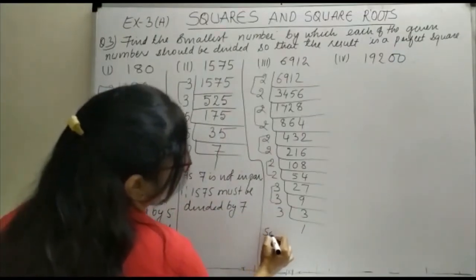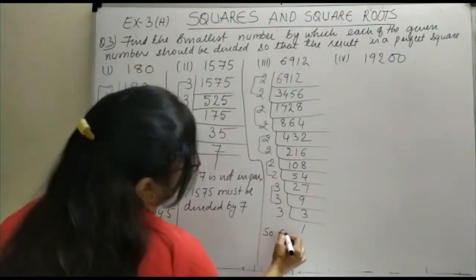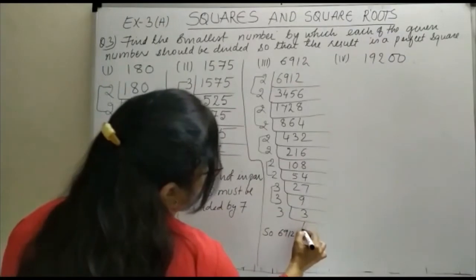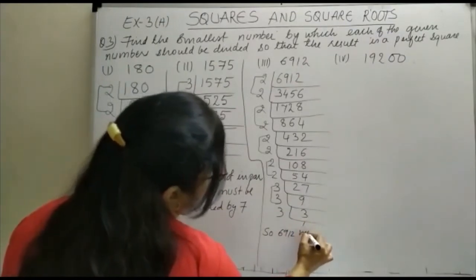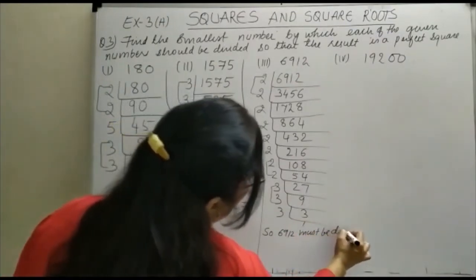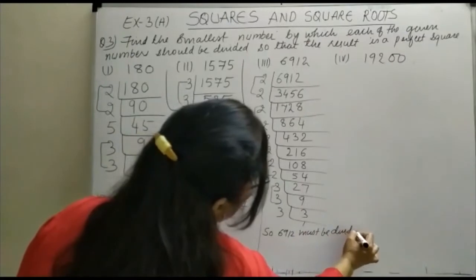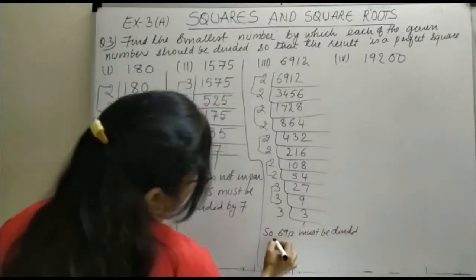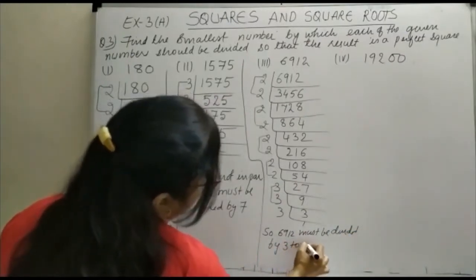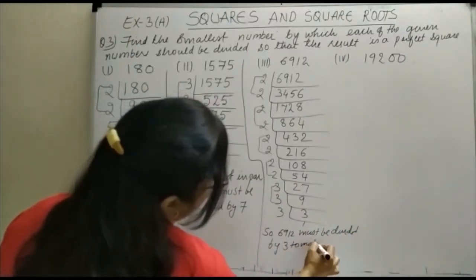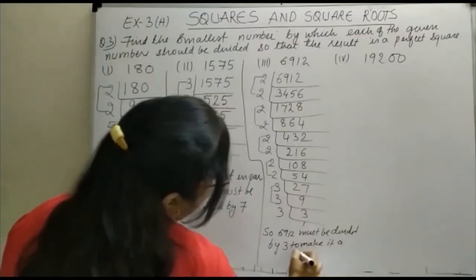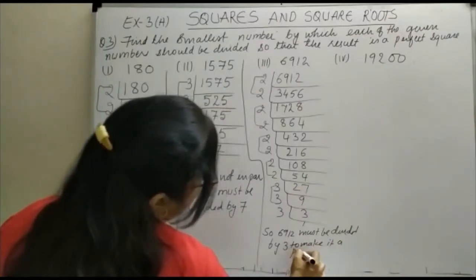So 6912 must be divided by 3 to make it a perfect square.